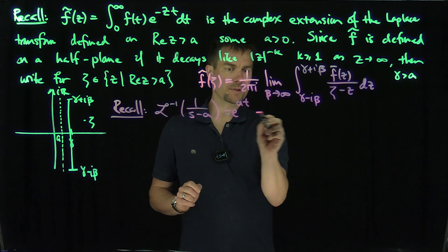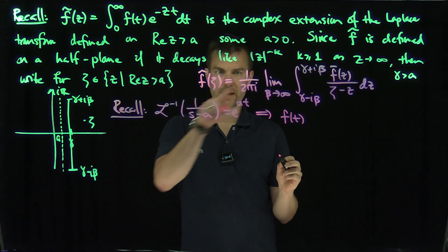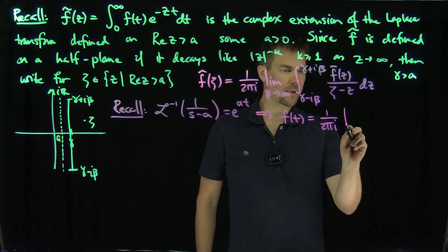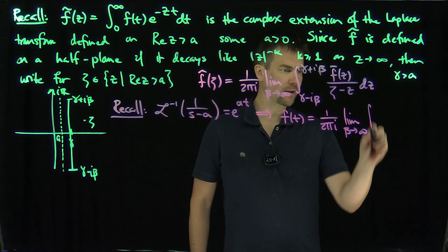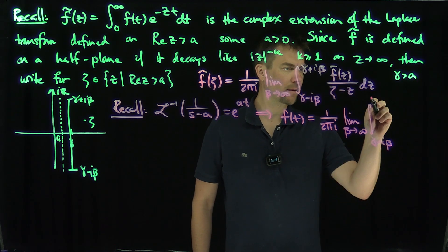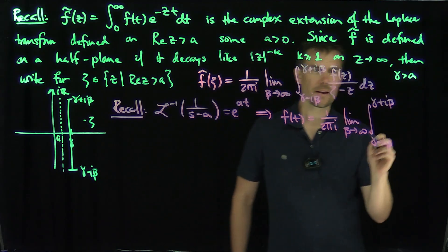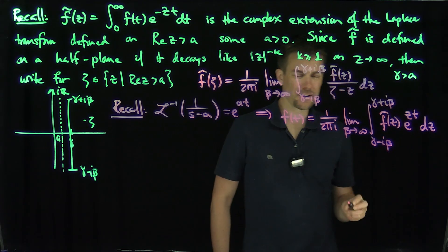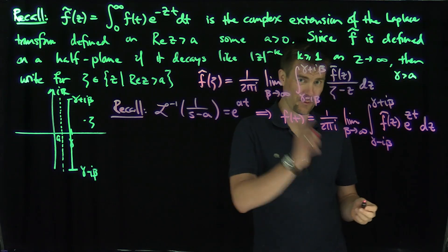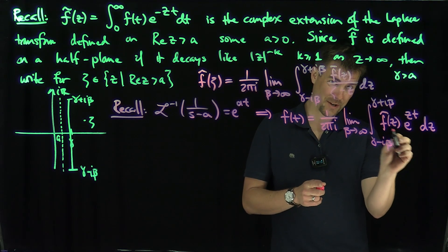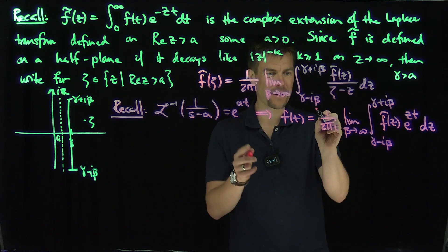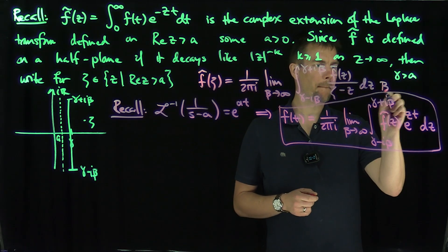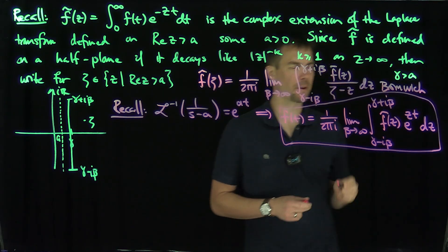That's the fundamental fact, provable with Taylor series. So what this tells me is that f of t — the inverse Laplace transform — is going to be 1 over 2 pi i, the limit as beta goes to infinity, of the integral from gamma minus i beta to gamma plus i beta, of f-tilde of z times e to the z t, dz. So if I give you a Laplace transform f-tilde of z, I can do the inverse Laplace transform by this formula. This is the Bromwich integral, the Bromwich formula.